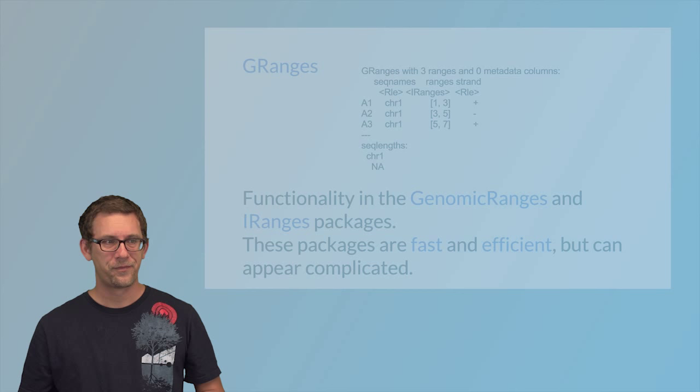And there's also some information about the genome, which is not very helpful in this case here. In this case, the software has inferred that there's a single chromosome and it doesn't know how long the chromosome is. But usually, when we work with human data, we know exactly how long the different chromosomes are, and many people like to store this information in the object as well.